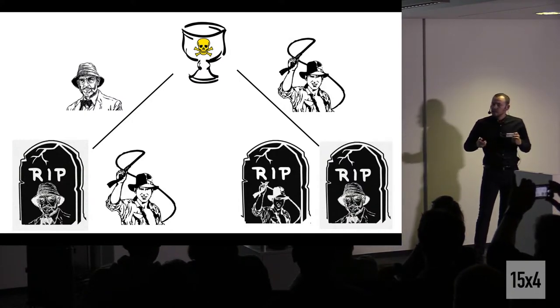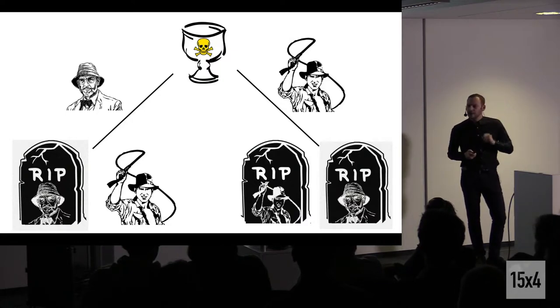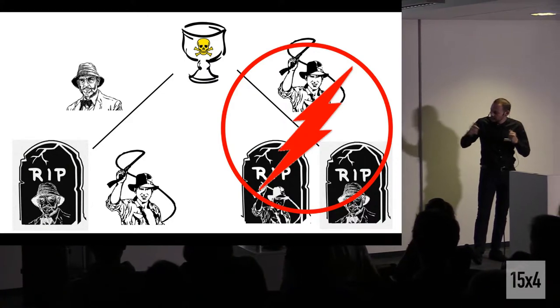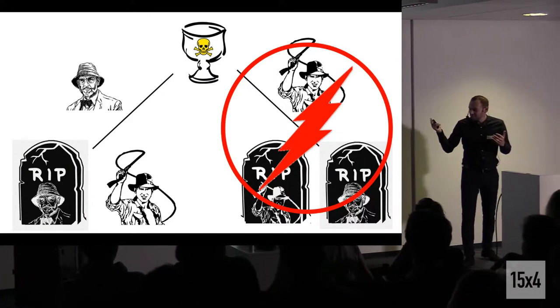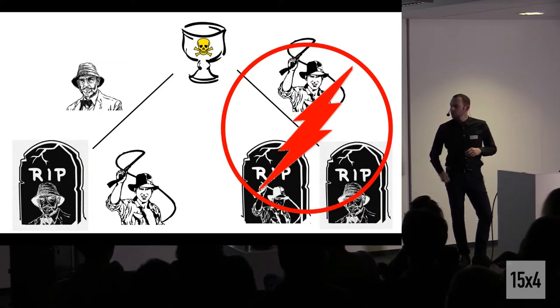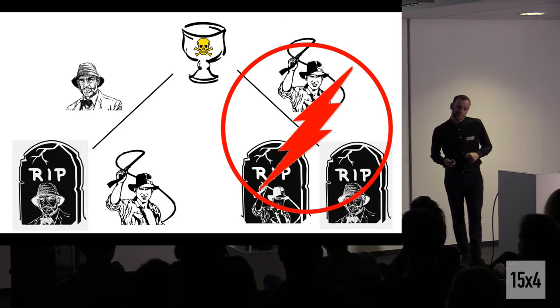So actually, Mr. Jones Jr. has chosen the wrong strategy. The only way to find out is to give the cup to his father because Indy would stay alive in this case. And this is the so-called dominant strategy. I will return later to it. So you see, Hollywood doesn't care much about logic.